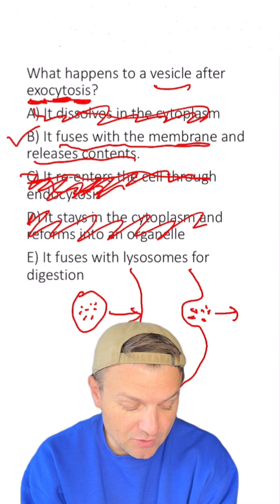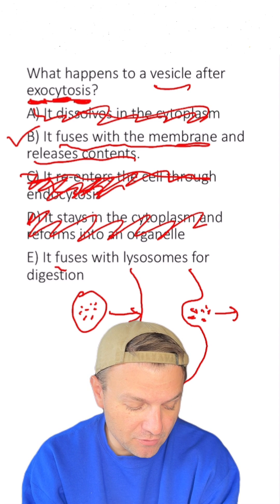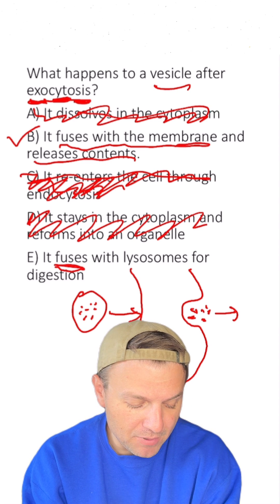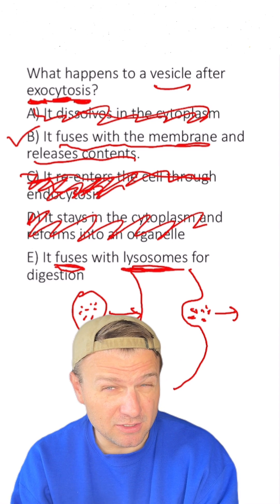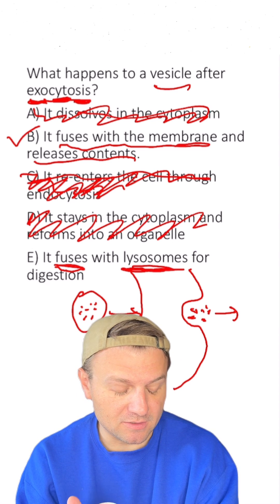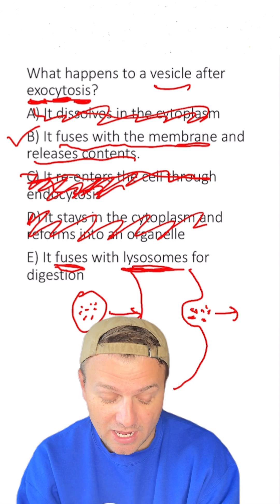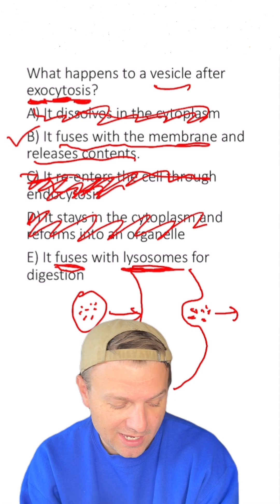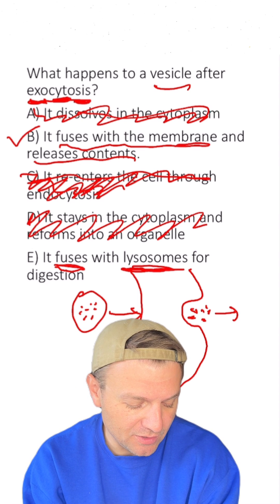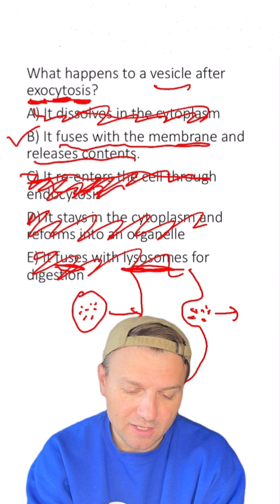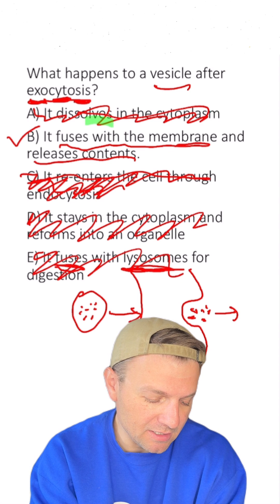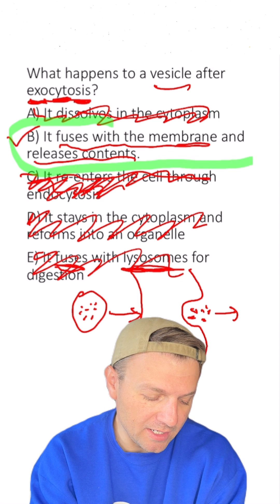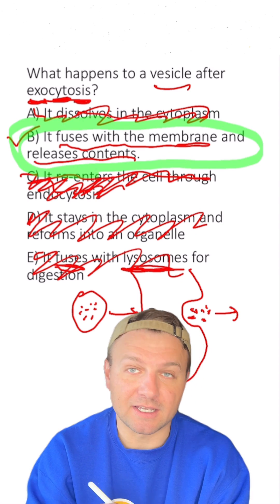And then the last one — it fuses. I like that fuses word, but it doesn't fuse with lysosomes. Vesicles can do this, but it's not what's going to happen during exocytosis. So E is also out. That's why B is our right and correct answer.